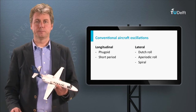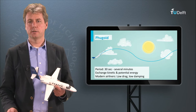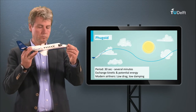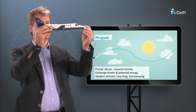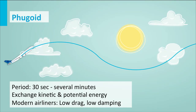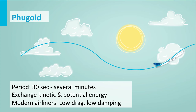The fugoid is a very slow maneuver — it goes nose up, nose down. Looking at the animation, what it does is basically exchange kinetic and potential energy: altitude energy and energy due to speed. You have less altitude and higher speed in the lower part, and then it decreases again, and this can continue for quite a while.